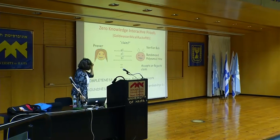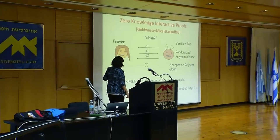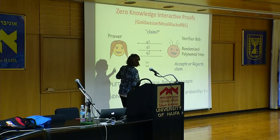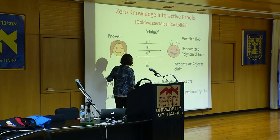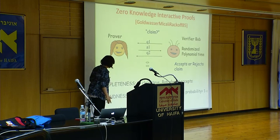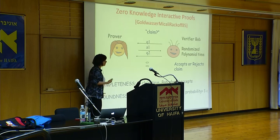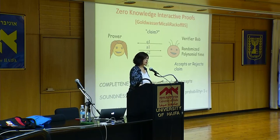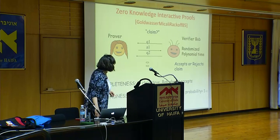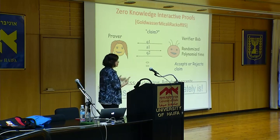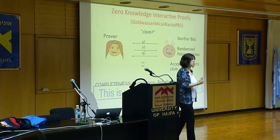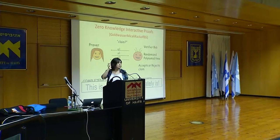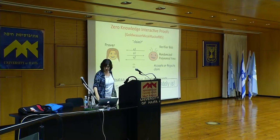The important part of this entire interaction is that the verifier never learns what x is. In fact, by a simulation-type argument, he could have come up with all the random material he sees on his own. Besides the conviction that she must have known how to solve the equation, and therefore there is a way to solve it, he receives nothing else. This is called a zero-knowledge interactive proof.